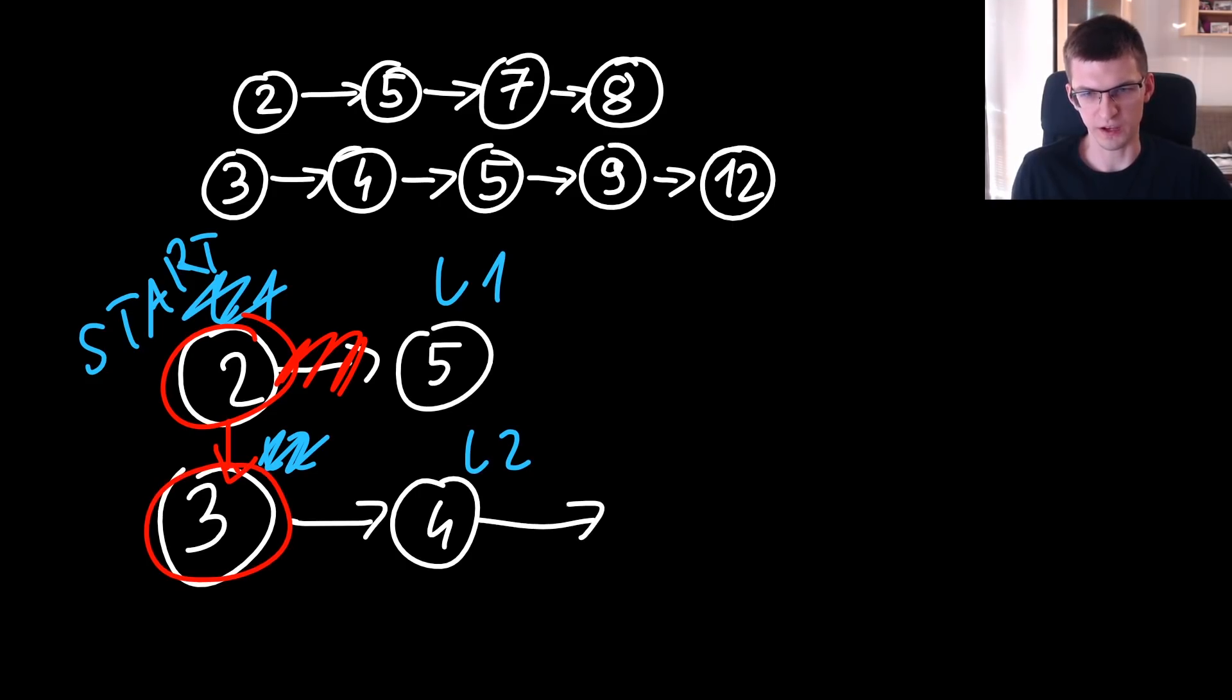And then so far the list is 2 to 3, then 4 is smaller than 5 so I will move L2 to be more on the right. After 3 there should be pointer to 4.